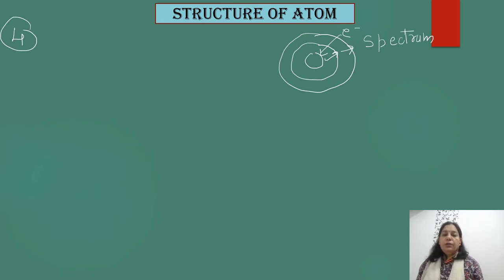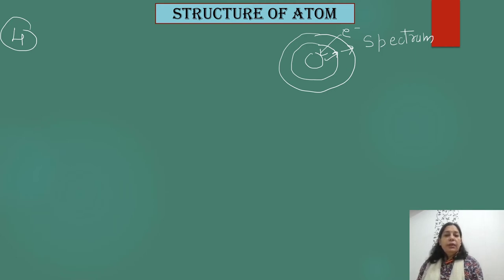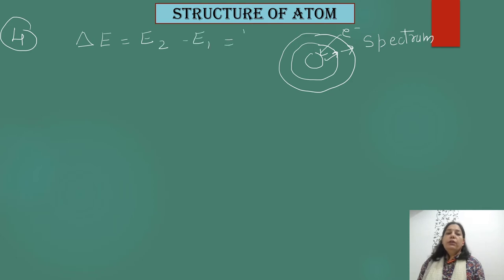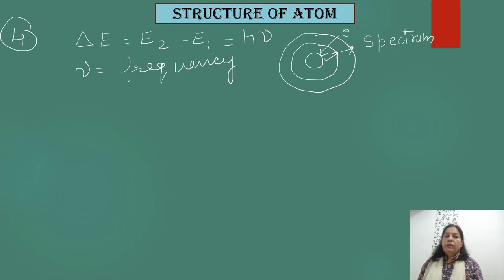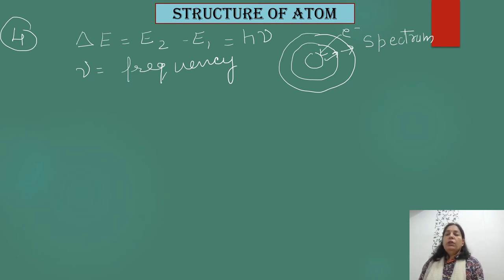If external energy is provided to atoms in the form of electricity or heat, electrons jump to a higher energy level and absorb that energy. After some time, they lose energy and come back to the ground state. The energy difference is given by ΔE = E₂ − E₁ = hν, where ν is the frequency of the emitted radiation, E₂ is the energy of the higher orbit, E₁ is the energy of the lower orbit, and ΔE is the difference.